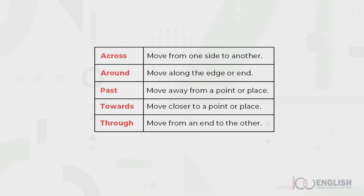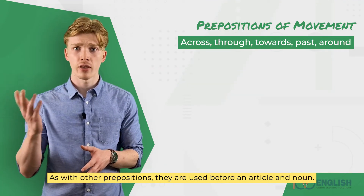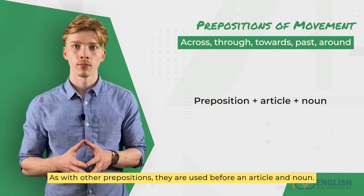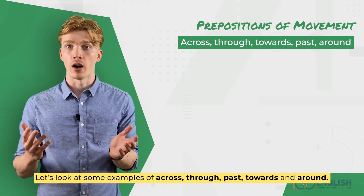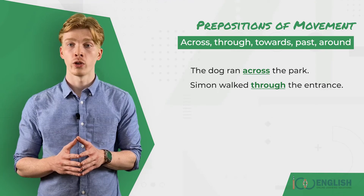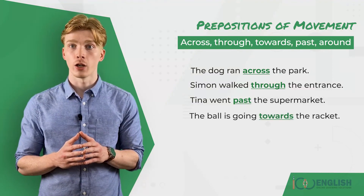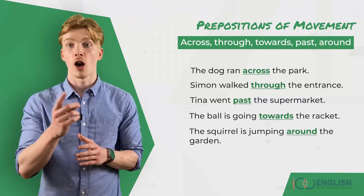Let's check their meanings. Across means that I moved from one side to the other. Around means that I moved along the edge of the roundabout. Past means that I moved away from the shop. Towards means that I moved closer to the shop. Through means that I moved from one end of the tunnel to the other end. As with other prepositions, they are used before an article and a noun. Examples: The dog ran across the park. Simon walked through the entrance. Tina went past the supermarket. The ball is going towards the racket. The squirrel is jumping around the garden.